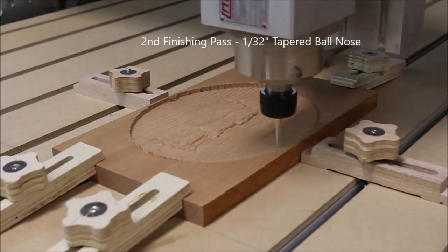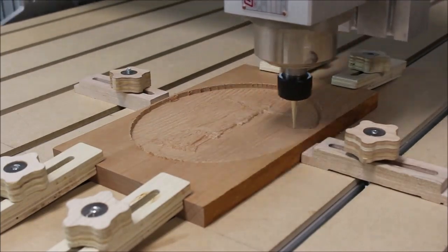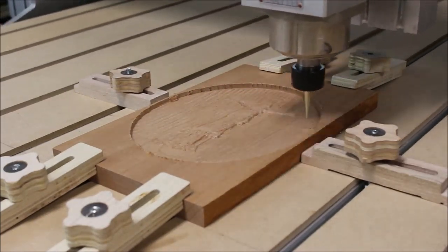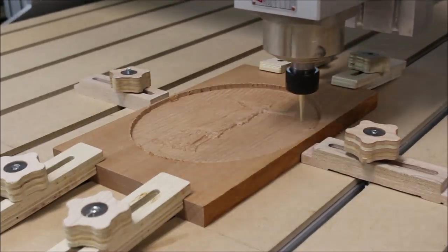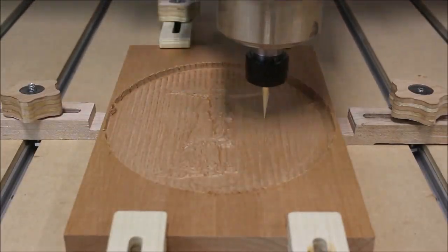The first finishing pass was with a 1/8-inch tapered ball nose, and then this one here is with a 1/32nd tapered ball nose. They don't make much of a mess, just real fine dust, so I decided to film this with the dust shoe out of the way so you can get a look at it going back and forth there.